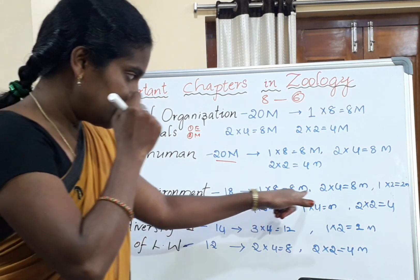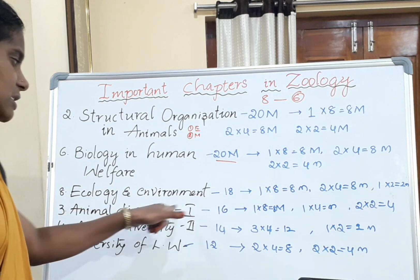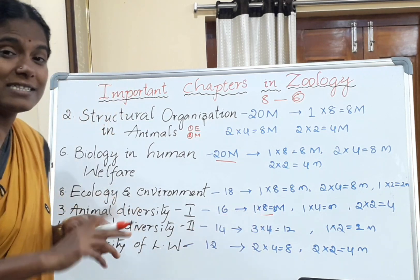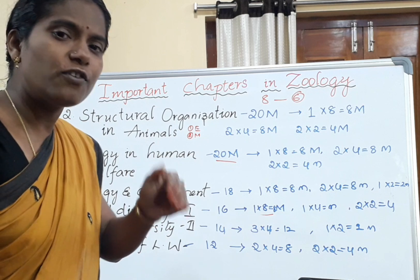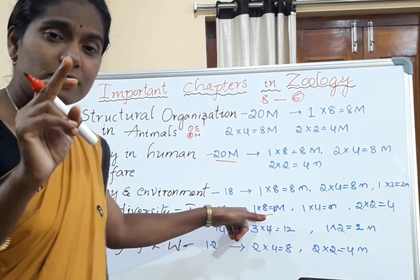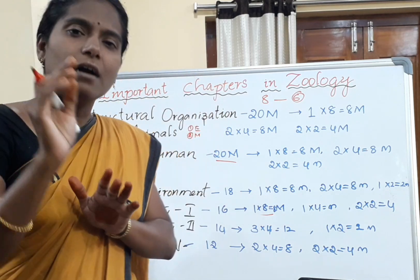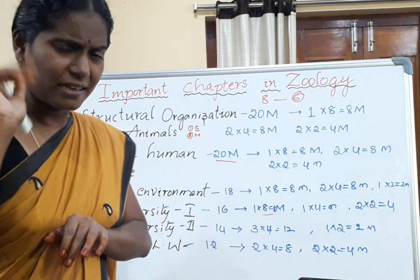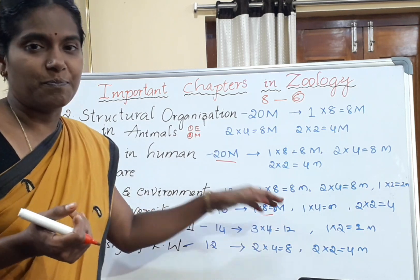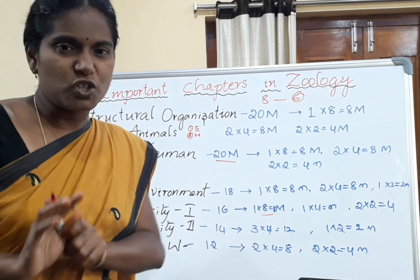Coming to Animal Diversity — Chapter 3, covering non-chordates or invertebrates — there is one essay question. You should read two topics: the reproductive system of Pheretima posthuma and the digestive system of Pheretima posthuma. For the reproductive system, just draw the diagram and label it — that carries eight marks and is very easy. The digestion process, mechanism, and diagram is another essay question from this chapter.